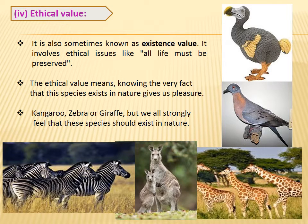The next value is ethical value, the most important value as a human being, because this value distinguishes us from animals. It is also called the existence value, related to feelings or emotions connected with human beings. When I say zebras and kangaroos are beautiful creatures of the grassland ecosystem, you feel happiness inside your mind — that is called ethical value. And when I say dodo or passenger pigeon, you feel they are not existing in this world, creating a slight sad feeling — these feelings are also called ethical value or existence value.